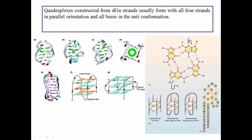Lots of interactions and repulsions are involved, so this kind of structure is really less favorable and less stereochemically stable. But we can still find this kind of structure, and more importantly, we can find it in a very important region of eukaryotic DNA — the eukaryotic genome — specifically in regions called the telomeres.